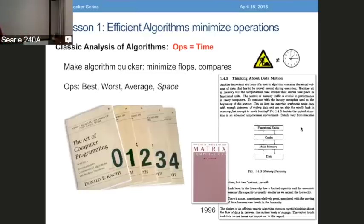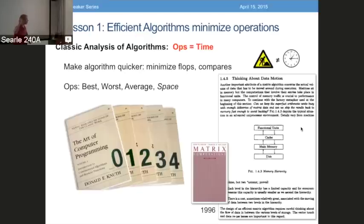From the Knuth books to the books on matrix computation, it's all about optimizing the best case, worst case, average case. How many people have taken an analysis of algorithms class? You look at bubble sort, you look at other types of sort. What do you do? You compare compares, you count them up. Whichever algorithm has the least number of compares, that algorithm is faster.